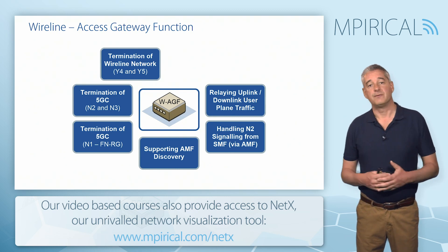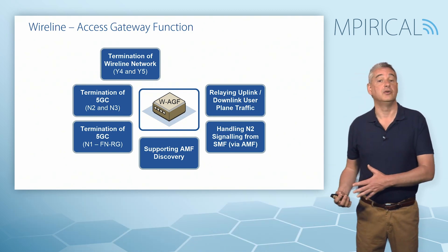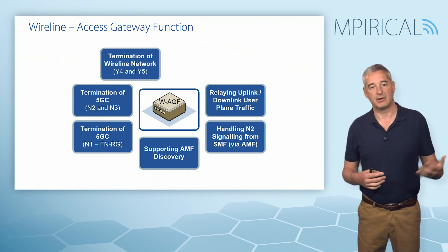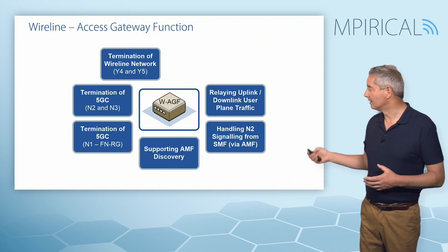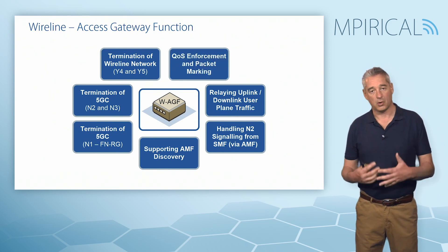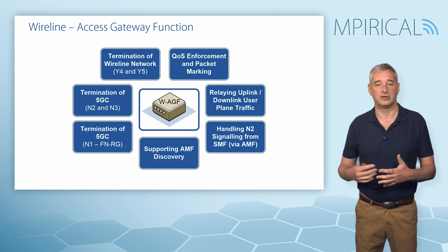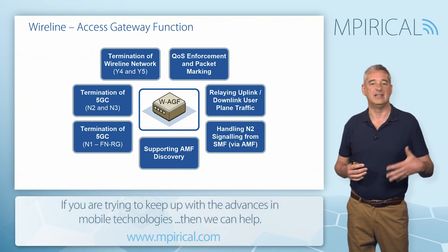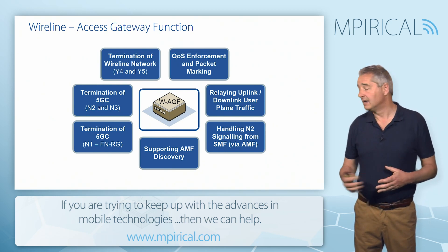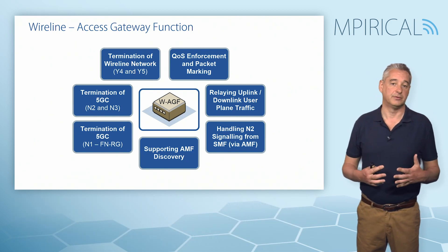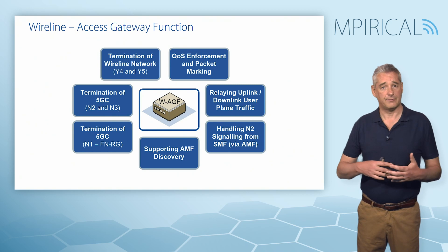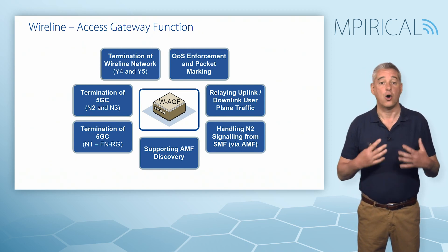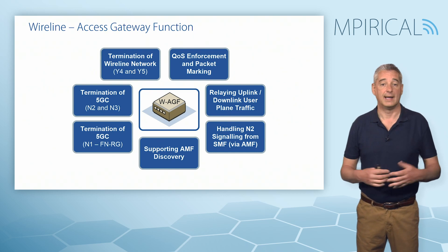The Wireline Access Gateway Function deals with both the user plane and the control plane. In the case of the user plane, it is responsible for passing uplink and downlink data between the residential gateways and the UPF. It's also important to stress that it can handle quality of service enforcement and packet marking. Unlike Wi-Fi offload, which simply releases data onto the internet in a best-effort format, we are capable of supporting defined QoS. The mapping between 5G PDU sessions and the relevant data sessions across cable or broadband networks is also a responsibility of the WAGF.